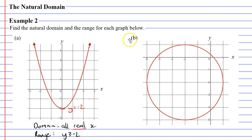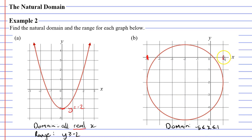Looking at question B, once again we're finding the natural domain — the domain that occurs naturally. You might notice that the graph exists for x values between negative 5 and 1. So we'll write down that the domain is the set of x values such that negative 5 ≤ x ≤ 1. It's important we use the less than or equal to sign because the graph also exists when x equals 1 and when x equals negative 5. Looking at the range, the graph exists for y values as high as 1 and as low as negative 5, so our range looks exactly the same as the domain except we put a y in the middle: negative 5 ≤ y ≤ 1.